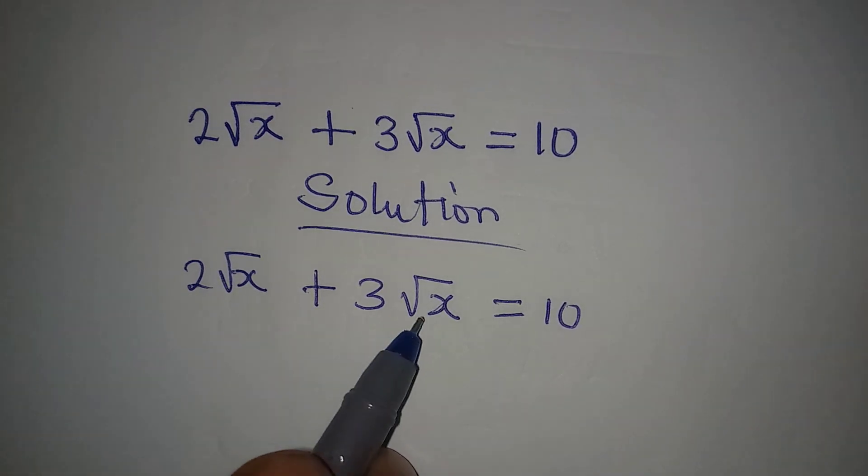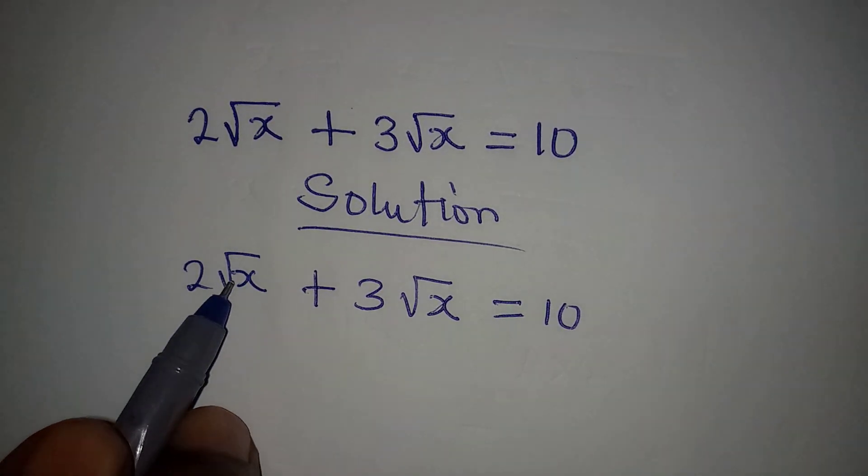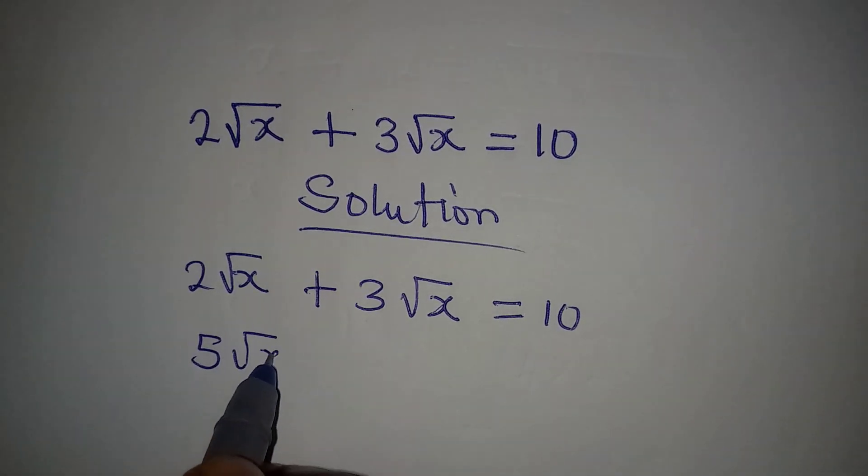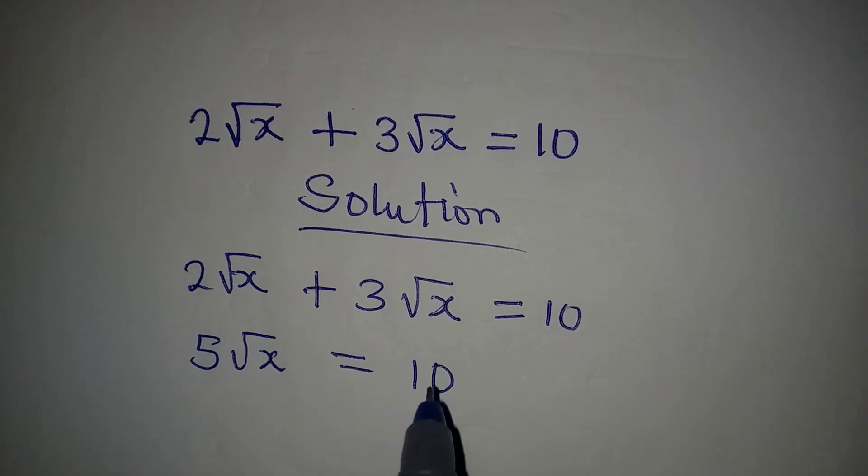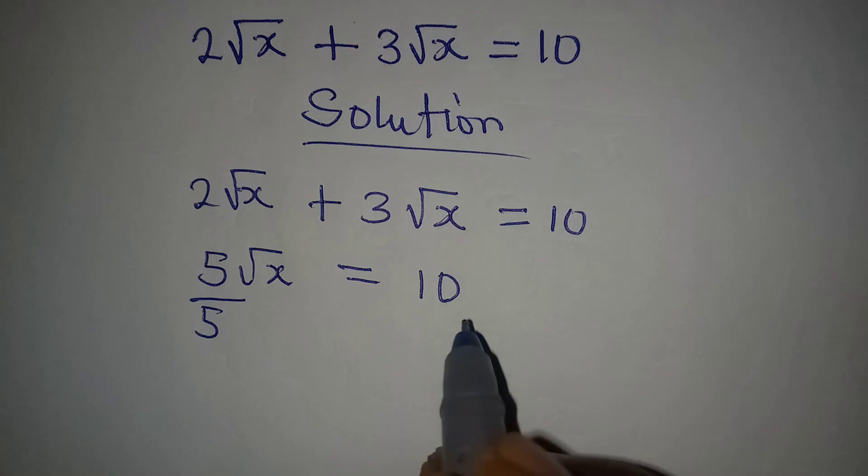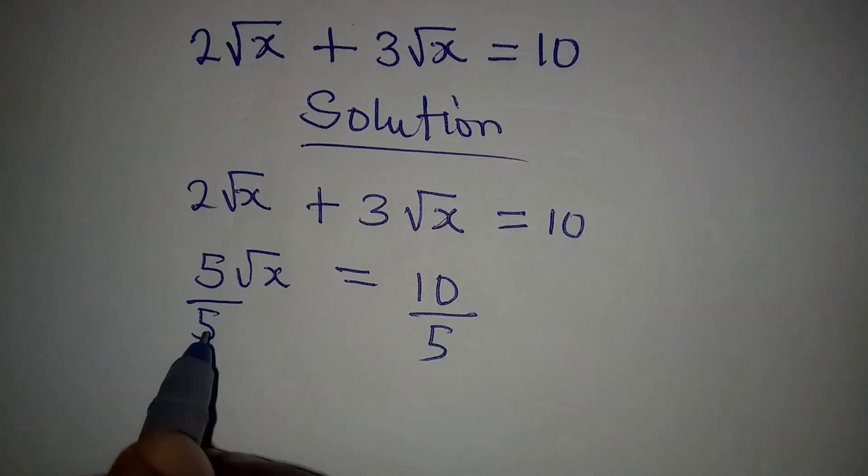This can be combined and we have 5√x equal to 10. And then why don't we divide by 5 since 5 is the coefficient? This and this will be gone, then √x is equal to 2.